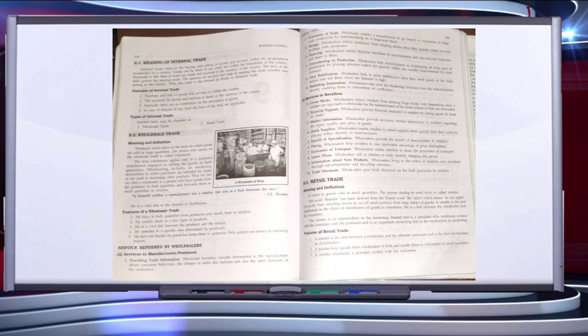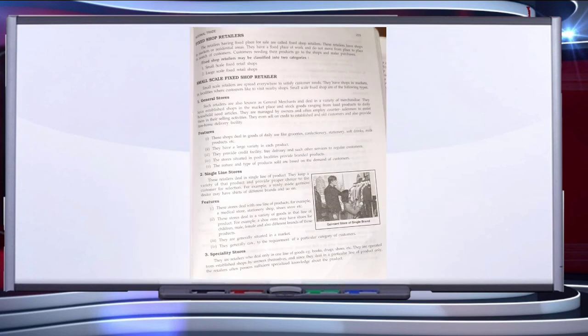If we talk about types of retailers, then retailers can be itinerant or fixed shop. Itinerant retailers are those who do not have a fixed place — they move from one place to another for sale. Fixed shop retailers can be small scale or large scale. As per the syllabus, we mainly cover large scale retailers, which include department stores, multiple shops, shopping malls, mail order business, consumer cooperative stores, and vending machines.